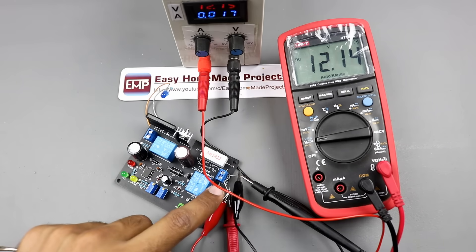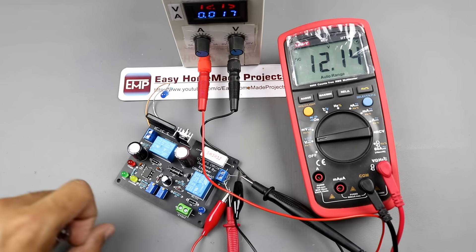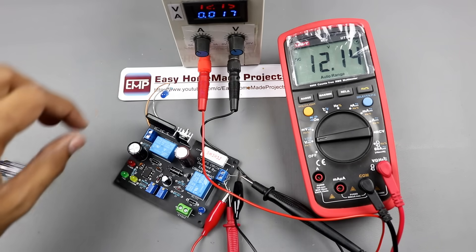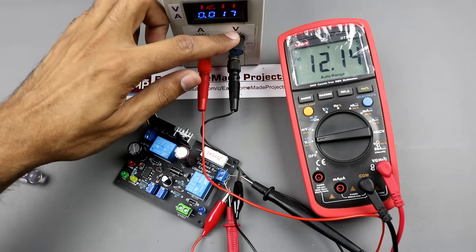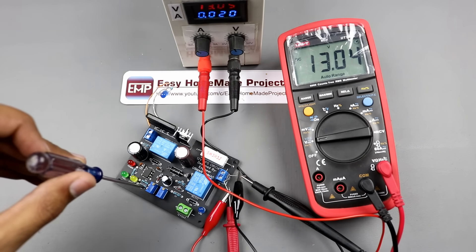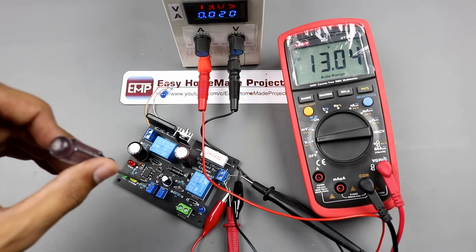Now, connect the battery terminals of the circuit to a variable DC power supply and set the voltages at 13 volts. Now, turn the LSP potentiometer until LED lights up.